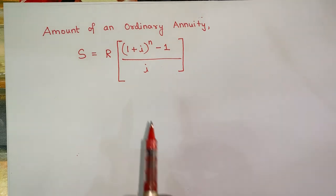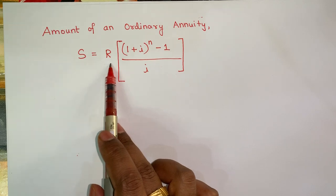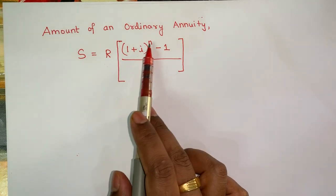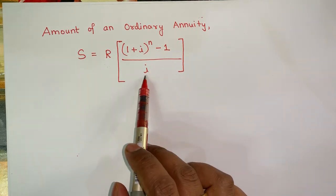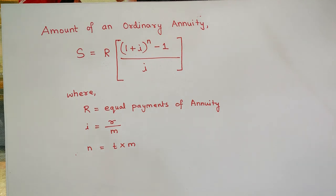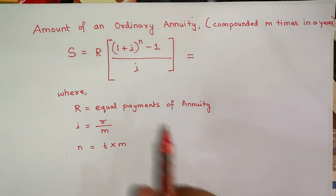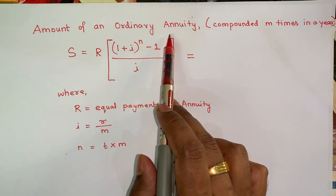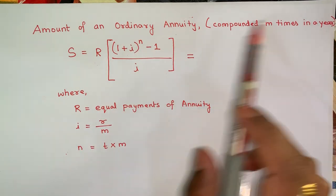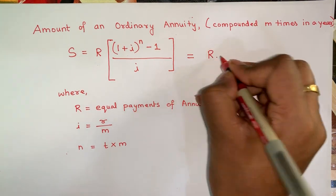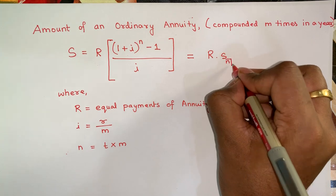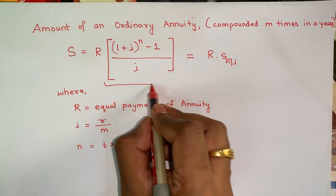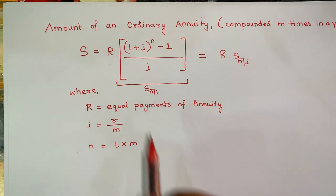Therefore the formula for the amount of an ordinary annuity becomes: Amount = R × [(1 + i)^n − 1] / i, where R is the equal payment of the annuity, i = rate of interest / M, and n = time period × M, where M is the number of compoundings done in a year. We can also rewrite this formula as R × S(n, i), where S(n, i) is nothing but the formula excluding R.